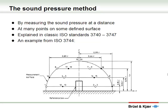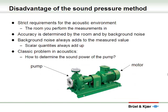For a long time sound power has been determined using sound pressure measurements. What that means is you place your source on a horizontal surface and place microphones on a hemisphere at a large number of points. Measurements of this type are clearly explained in classic ISO standards in the range 3740 to 3747. The picture shows an example from the standard ISO 3744. Determining sound power using the sound pressure method has a number of disadvantages. The room must be strictly controlled. The acoustic properties of the room and the background noise will influence the accuracy of your measurements. Because sound pressure is a scalar quantity, sound pressure levels always tend to add up, so any background noise will add to your measurements and cause an overestimation of the sound power.